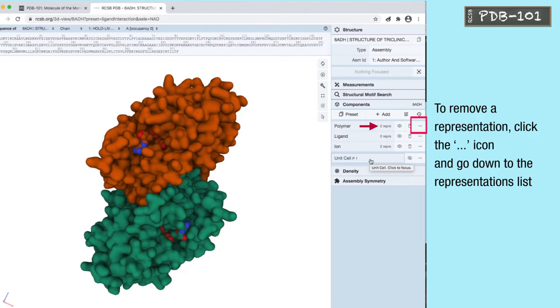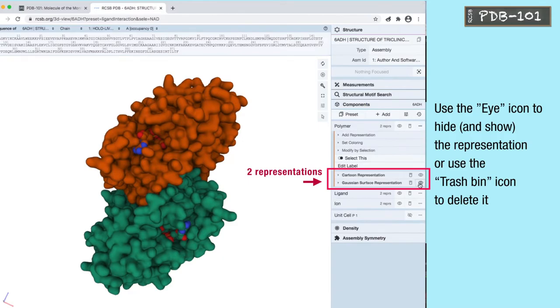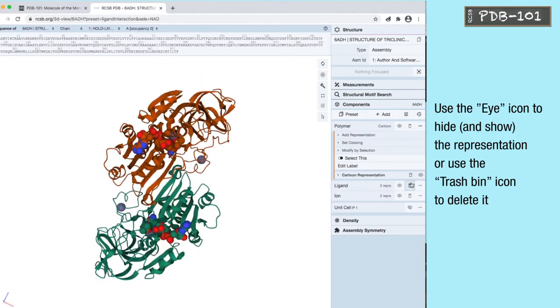To remove a representation, click the 3 dots icon and go down to the representations list. Use the eye icon to hide and show the representation or use the trash bin icon to delete it.